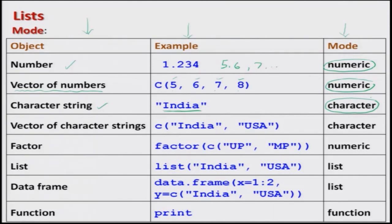If we take more than one character at a time, they can be combined using the c() command into a vector. For example, combining 'India' and 'USA' with the c() operator gives a vector of characters. A combination of characters is also a character, and hence the mode of a vector of character strings is 'character'.